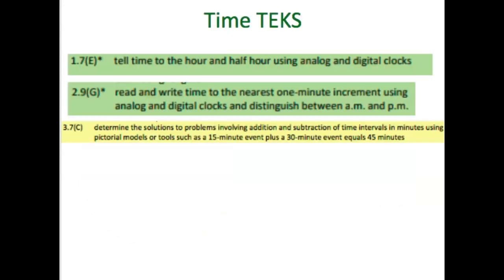If you look at the TEKS — these are snipped from the Lead Forward website — it actually starts in first grade, where it asks to tell time to the hour and half hour using both analog and digital clocks. From there, as they move up the grade levels, they have to be able to read and write time to the nearest one-minute increment, using both analog and digital clocks, and distinguish between AM and PM.